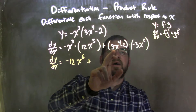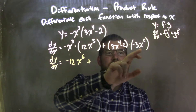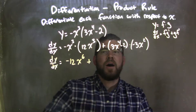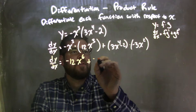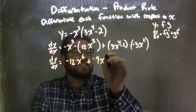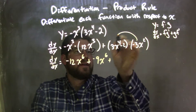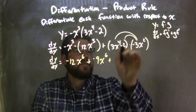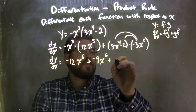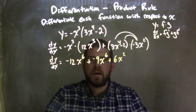Multiplying these out, we distribute the negative 3 across. So our negative 3x squared times 3x squared is negative 9x to the sixth, plus — distributing that negative 3 to both parts — the minus 2 gives us a positive 6x squared.